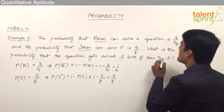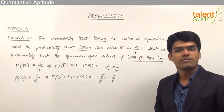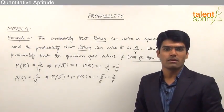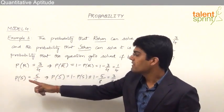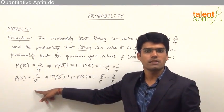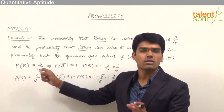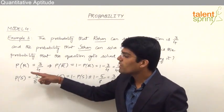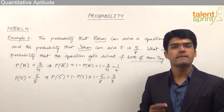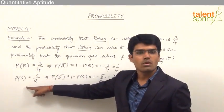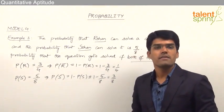Both of them try solving the question and we need to find the probability that the question gets solved. There are different cases: Rohan is successful and Sohan fails, or Sohan is successful and Rohan fails, or both of them are successful. So there are 3 different cases: Rohan can solve and Sohan cannot, Sohan can solve and Rohan cannot, or both of them can individually solve it.